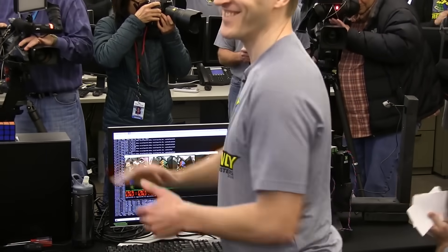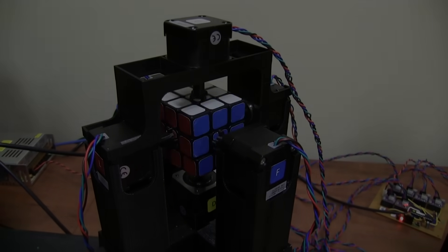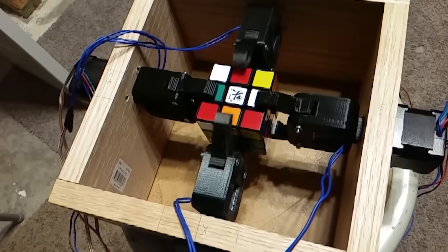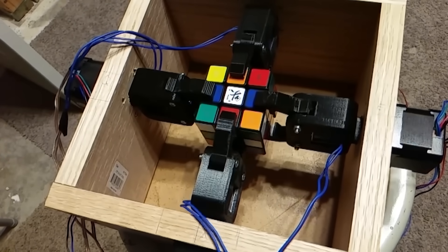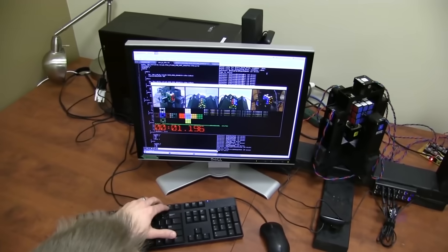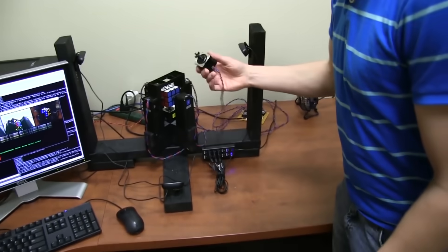This Rubik's Cube solving robot was developed by two software developers, Paul Rose and Jay Flatland. On February 5, 2016, the machine broke the 2.39 seconds world record by solving the cube in 0.09 seconds.